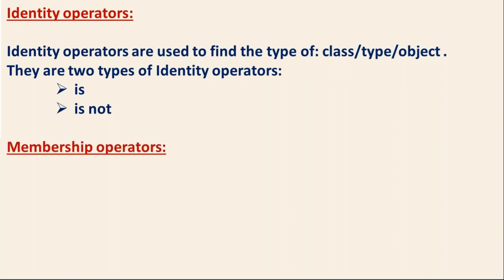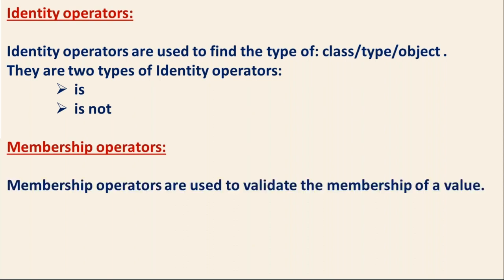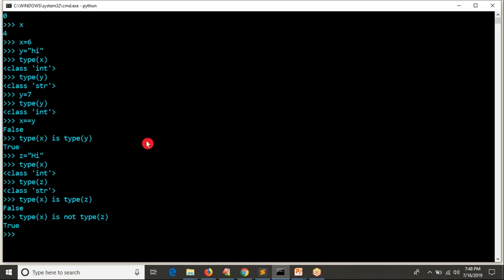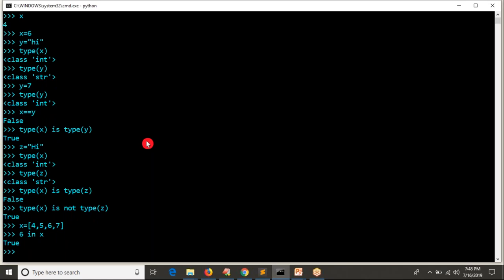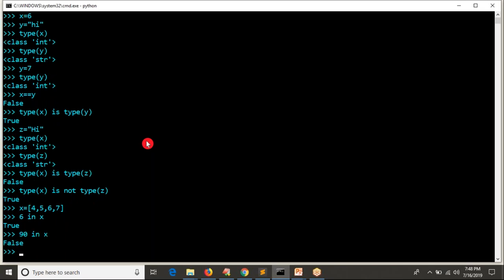The next one is membership operators. Membership operators are used to validate the membership of a value. For example, I have a list of values: 4, 5, 6, 7. Is 6 in X? Yes. Is 19 in X? No.